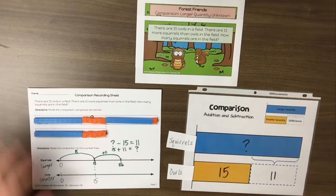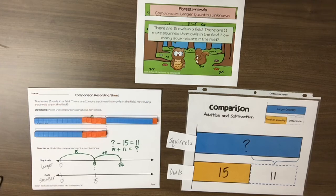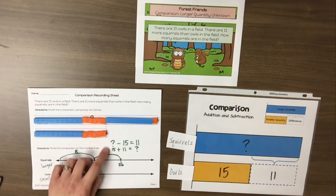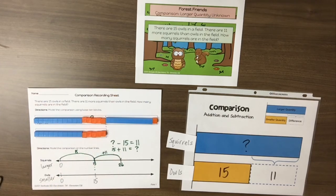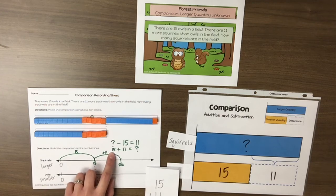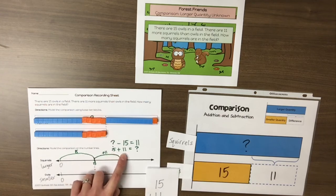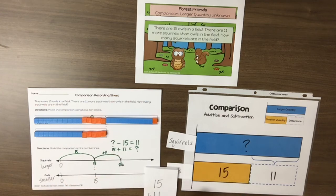We've used these representations to model the structure. After students understand the comparison structure, they can determine the situation and solution equations, and then apply an addition strategy to determine the larger quantity. So if we use the standard algorithm, we know our solution equation is 15 plus 11, which again gives us 26.